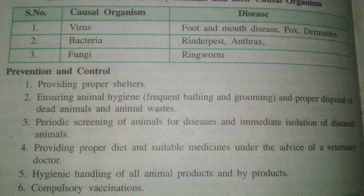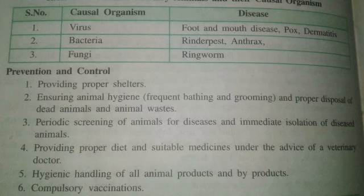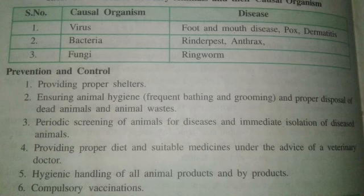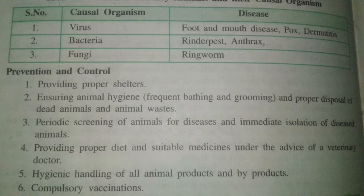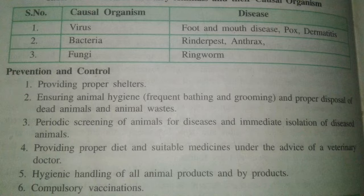The fifth method is the hygienic handling of all animal products. For all products and by-products — whether it is milk, meat, chicken, or eggs — we will store and handle them in proper hygienic conditions. The sixth and last method is compulsory vaccination. For any type of animal, vaccines are available in the market. Don't forget to provide them the vaccines, because vaccination protects our animals. Compulsory vaccination is very important for domestic animals.